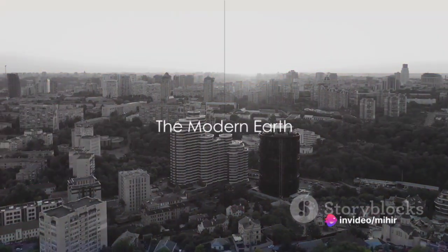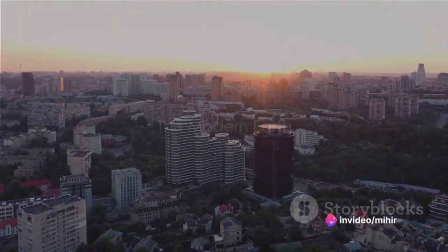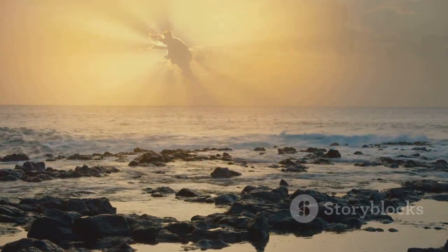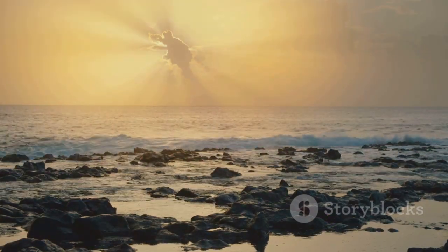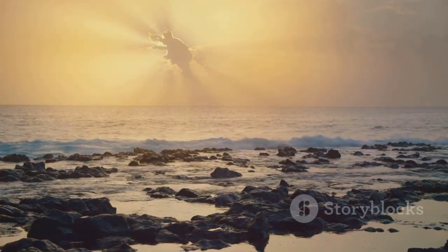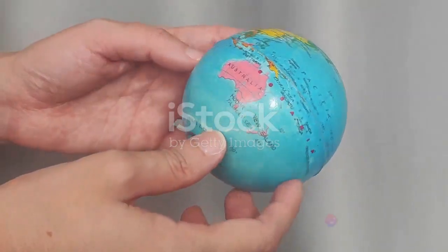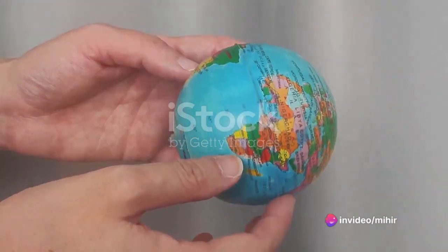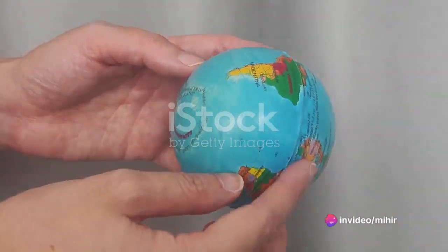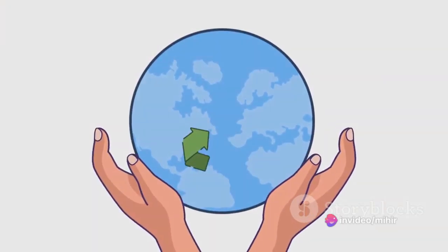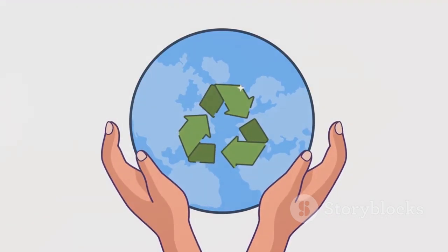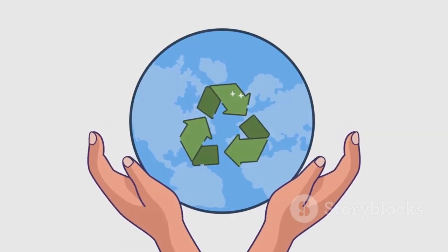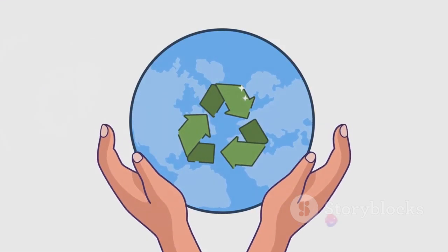Now let's fast-forward to the Earth we know today. The Earth's surface has undergone tremendous changes to form the continents and oceans we're familiar with. Imagine a jigsaw puzzle with pieces shifting, colliding, and drifting apart over billions of years — that's the fascinating process of plate tectonics, shaping our Earth into seven continents and five vast oceans.